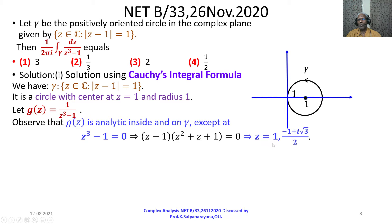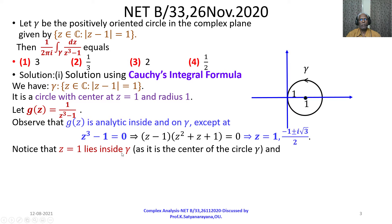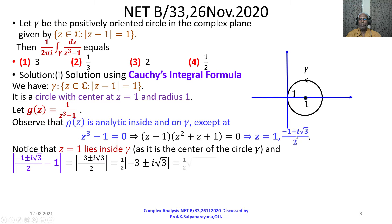The roots are z equals 1 and z equals (−1 ± i√3)/2 — that is omega and omega squared. So these are the simple poles of g(z). Notice that z equals 1 lies inside gamma because 1 is the center of gamma. For the other poles omega and omega squared, we calculate their distance from 1: if it is greater than 1, they lie outside gamma.